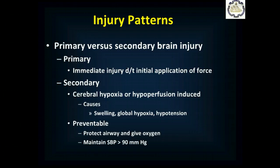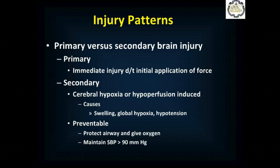If the patient is globally hypoxic — they have an airway problem, aren't breathing well, or a spinal cord injury has paralyzed the diaphragm — that can cause a secondary brain injury. You can provide additional oxygen and ventilate patients to prevent or decrease hypoxic brain injury. Hypotension — decreased blood flow to the brain because blood pressure is globally low — can also cause this injury. By protecting the airway, giving oxygen, and maintaining a systolic blood pressure greater than 90 mmHg (preferably 110 to 120 mmHg in an isolated head injury), you can decrease the risk of secondary brain injury.